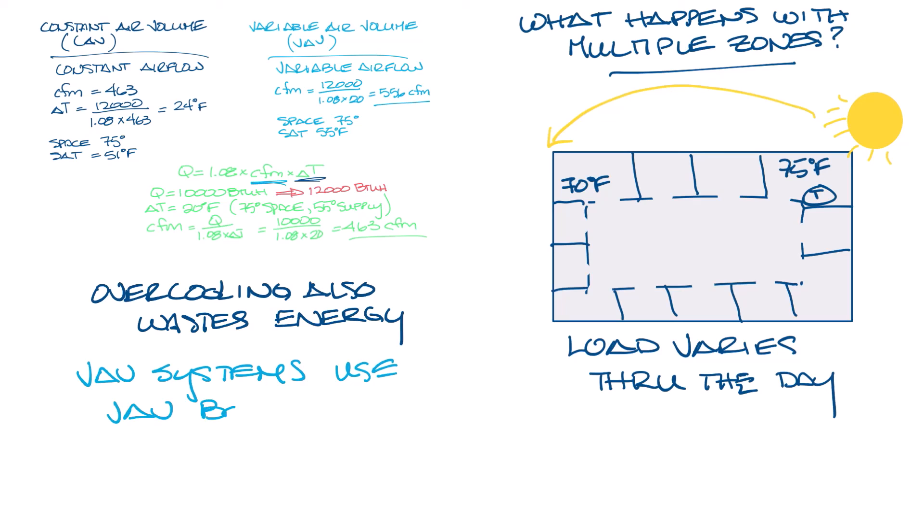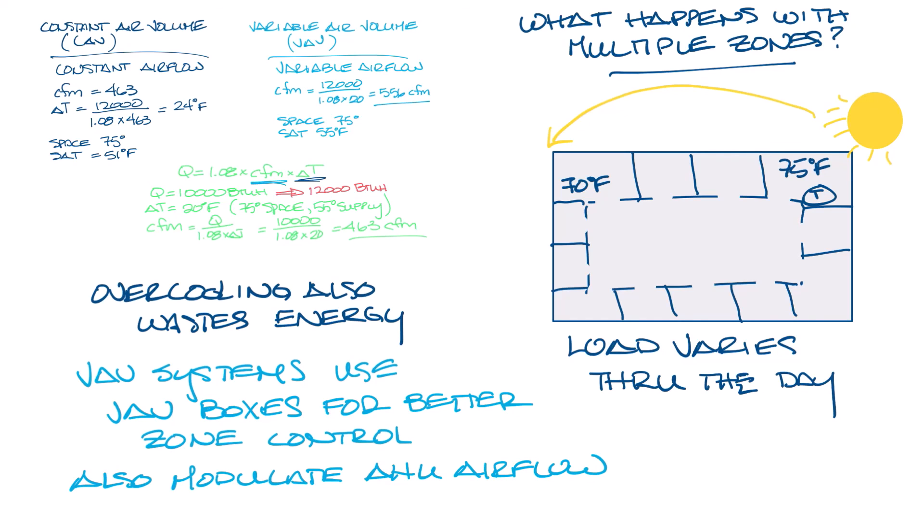These systems not only have VAV boxes controlling each zone, which we'll cover in next week's video, but they also can have the ability to modulate the airflow from the air handlers so that the entire system can react to load conditions in the building.